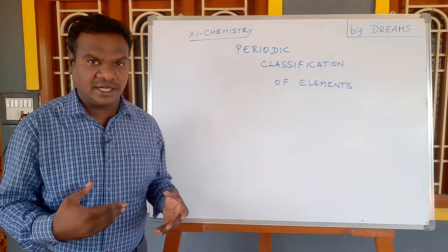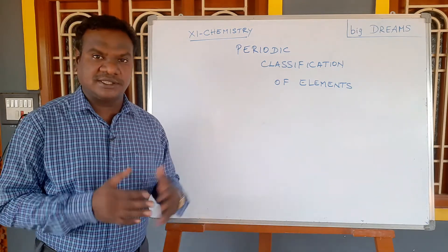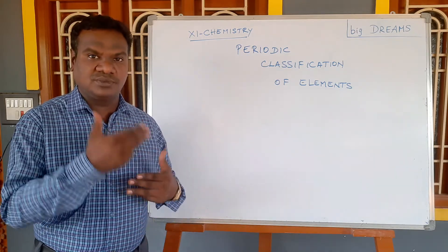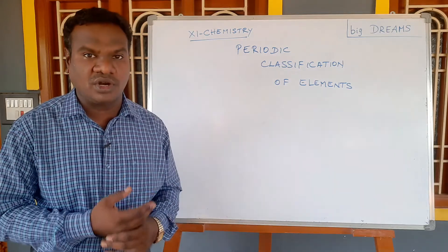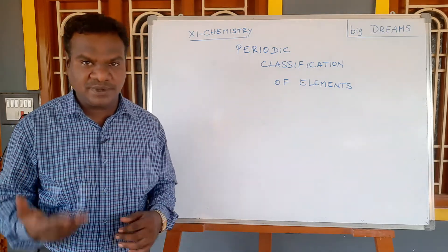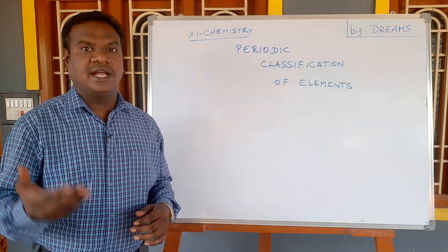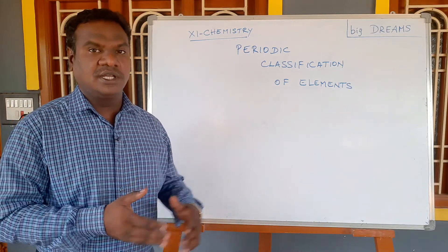Then came Döbereiner's Triads system, grouping three elements. Next was Newlands' Law of Octaves, followed by Mendeleev's Periodic Table, and finally the Modern Periodic Table that we use today.